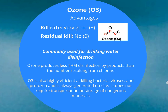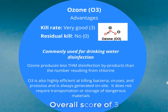Ozone, also known as O3, has a very good kill rate and is commonly used in drinking water disinfection. It produces less THM (trihalomethane) disinfection byproducts than those resulting from chlorine. It's also very highly efficient at killing bacteria, viruses and protozoa, and it's always generated on site — it doesn't require transportation or storage of dangerous materials.